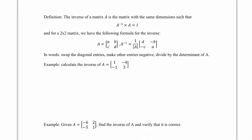To recap the definition: the inverse of a matrix A is a matrix with the same dimensions such that A inverse times A gives I. It's a special matrix that when multiplied by A yields the identity. For a 2x2 matrix, we have a formula for A inverse.